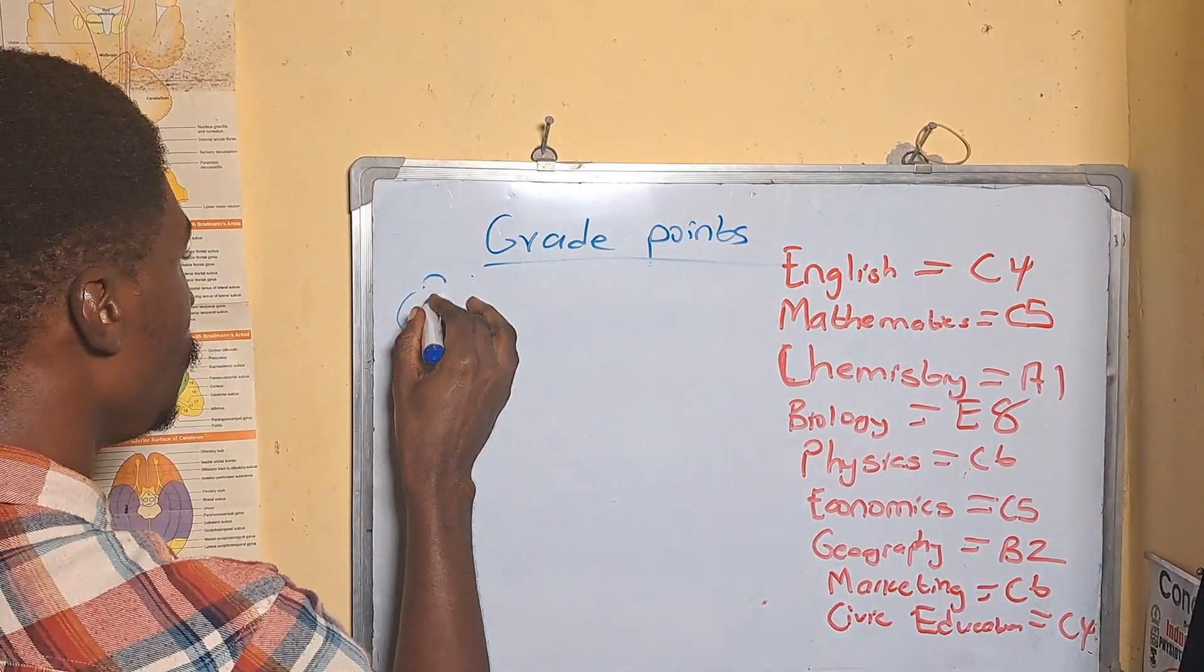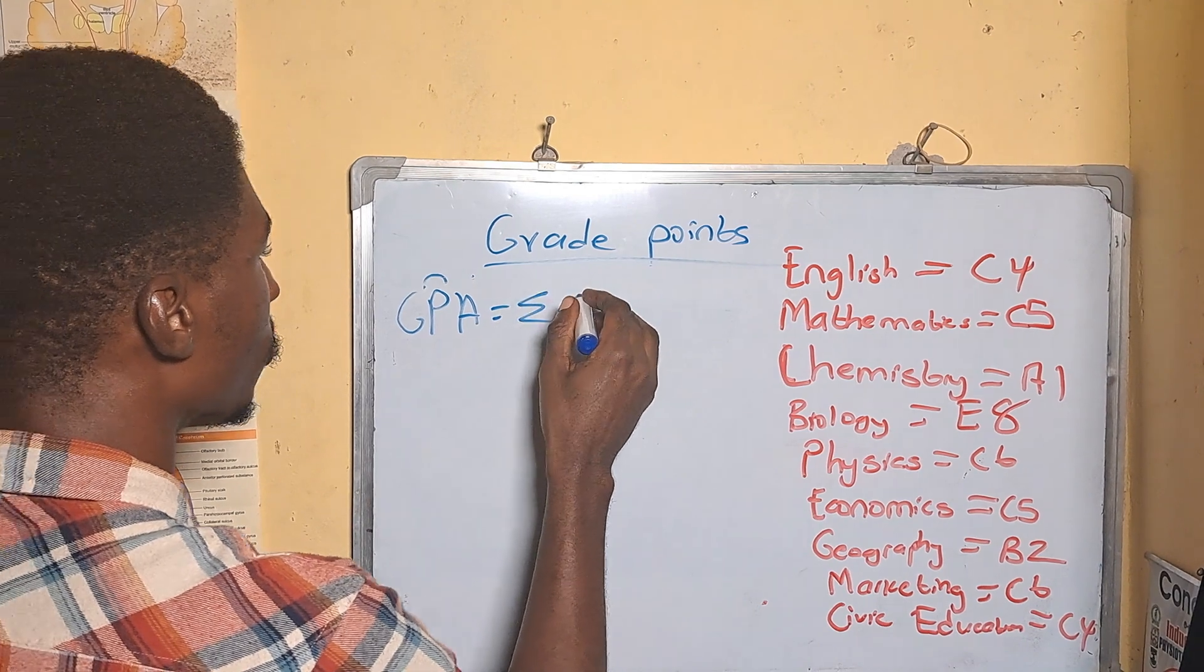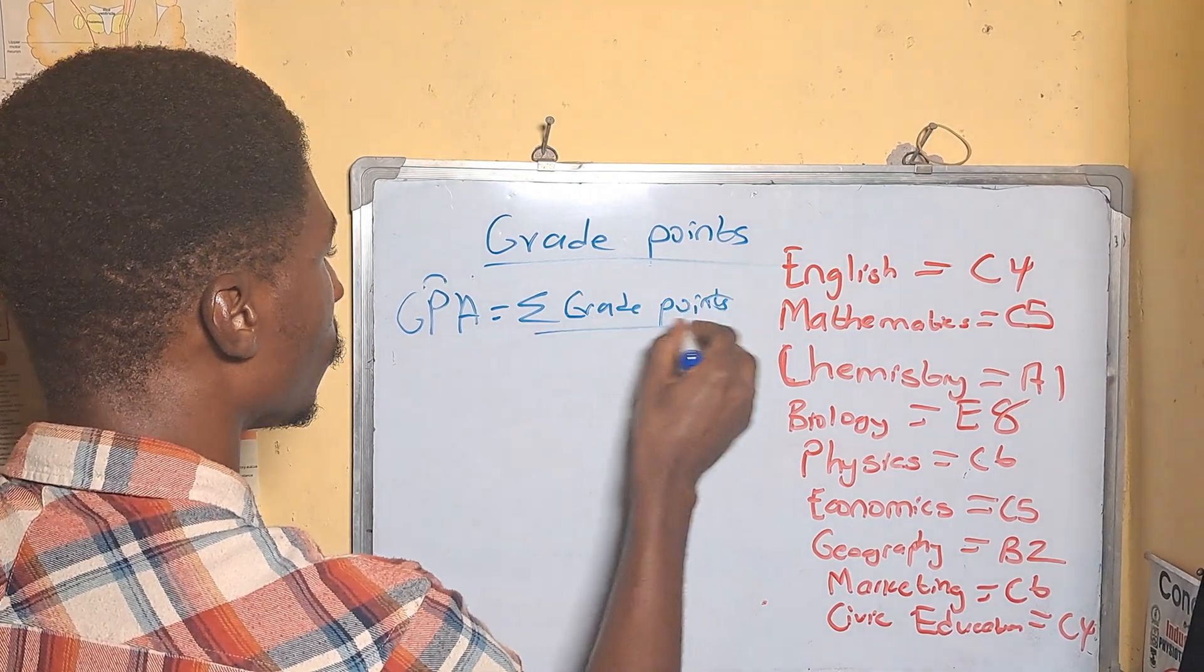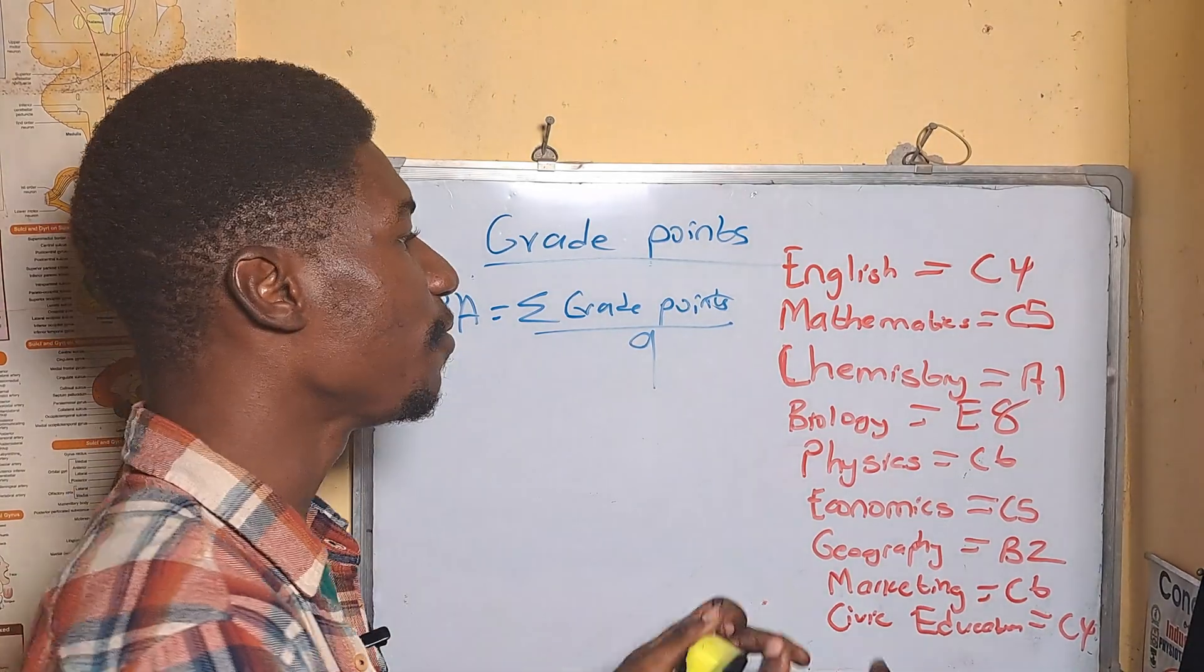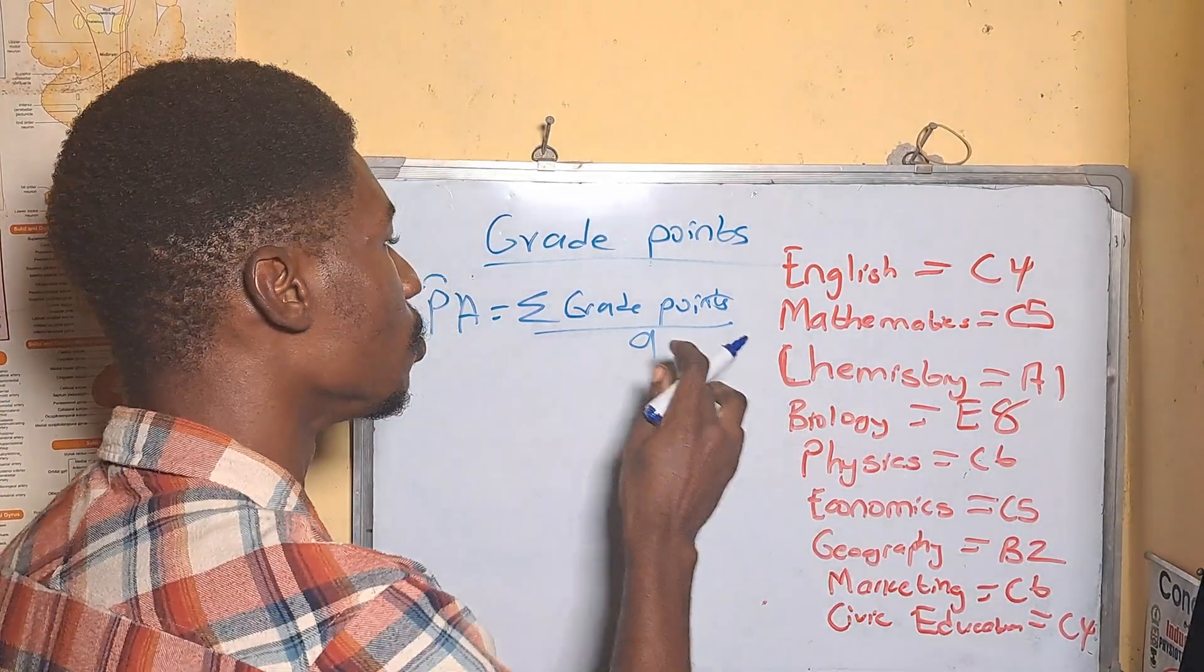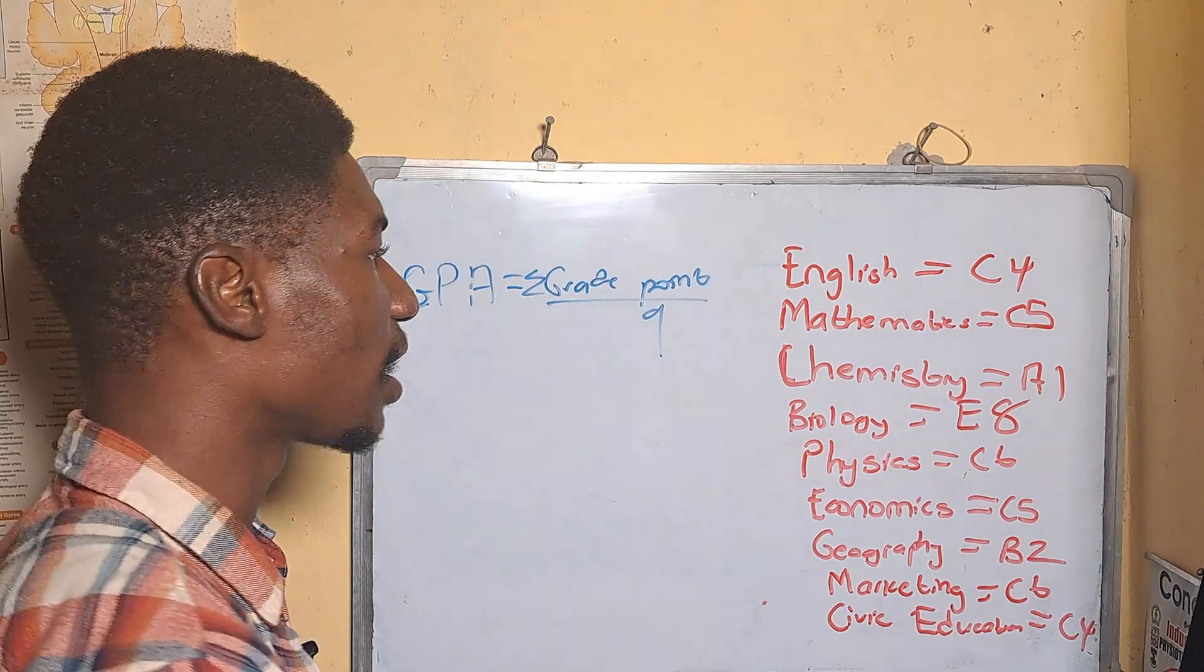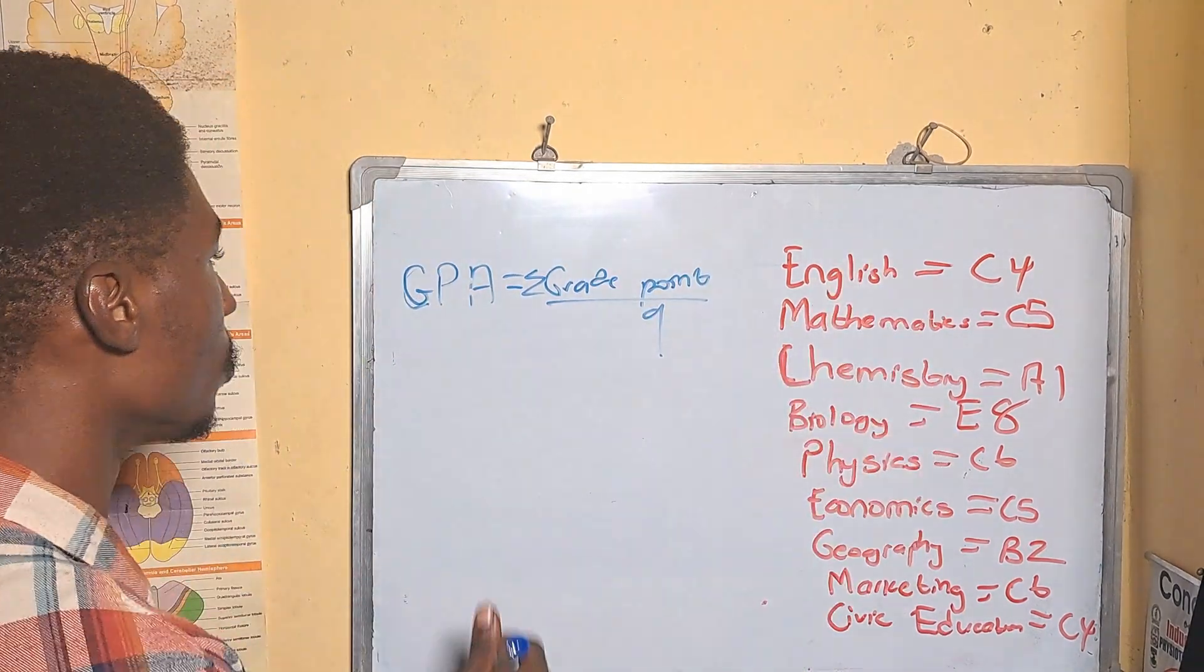The formula is GPA equals summation of grade points over nine, because we have nine subjects here. But if the subjects are eight, it will be over eight. So now let's calculate the GPA for the following subjects.